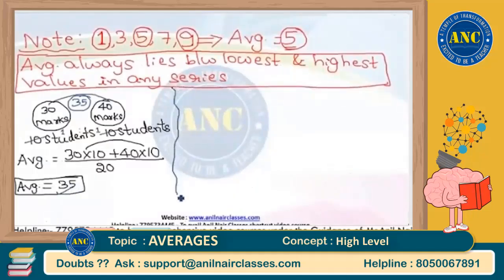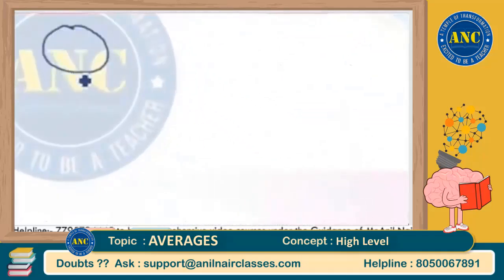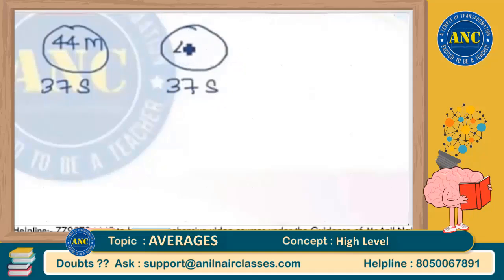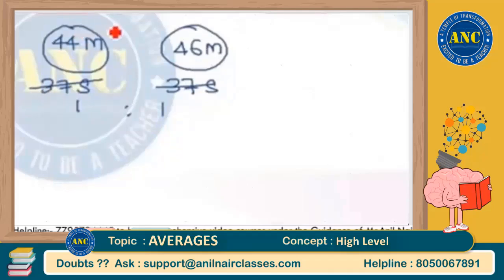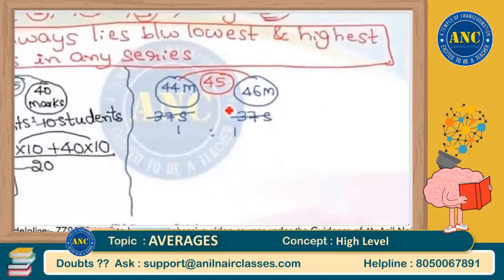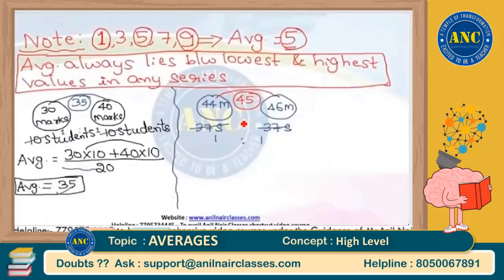One more example: suppose Section A has an average of 44 marks with 37 students, and Section B also has 37 students with an average of 46 marks. Since the number of students is in the ratio 1:1 (equal), I can directly say the combined average is (44 + 46) / 2 = 90 / 2 = 45 — the middle value. These two key points are very clear before we move to the original question.